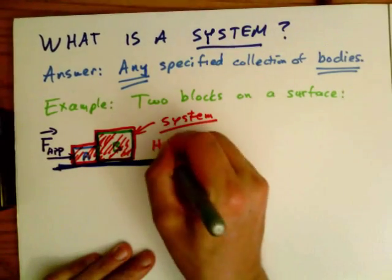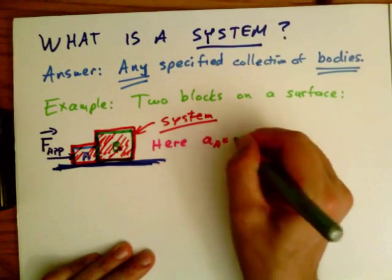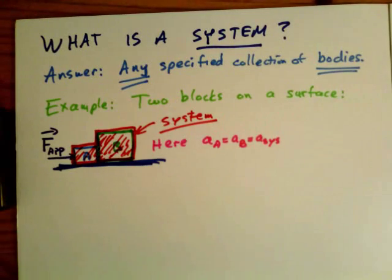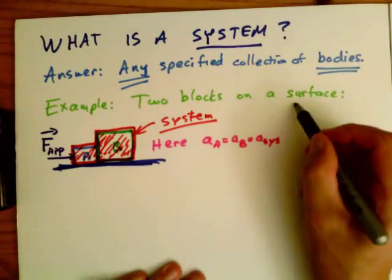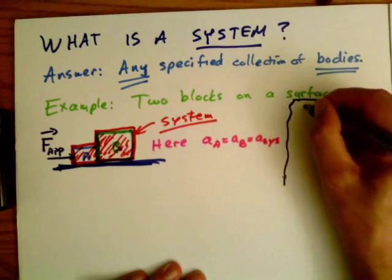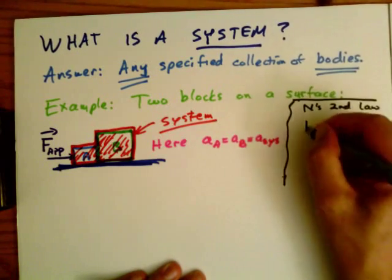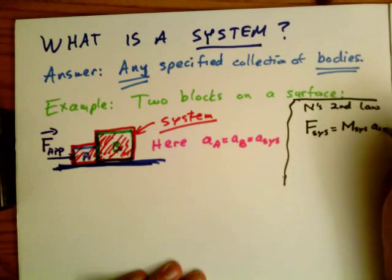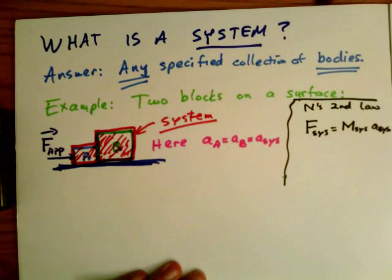The two bodies together. Now here the acceleration of A is equal to the acceleration of B, which is the same as the acceleration of the whole system. They move together so the two accelerations are the same. So we can apply Newton's second law in a very straightforward way. We can say the force on the system is equal to the mass of the system times the acceleration of the system.